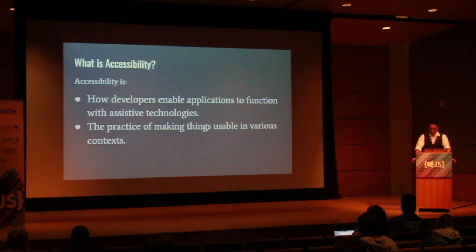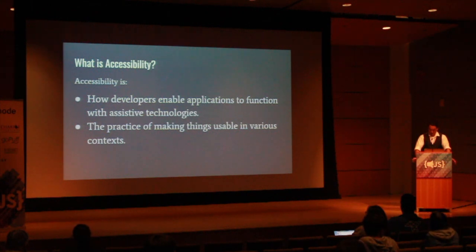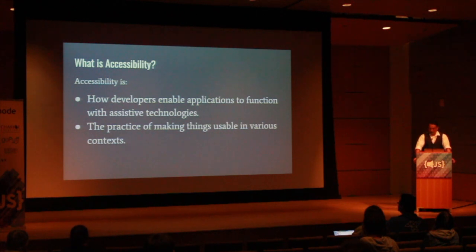Visual, auditory, motor, and cognitive are just some of the disabilities that we need to account for. Accessibility benefits people who are just temporarily disabled as well — people who are driving, parents with children, in low light, high noise environments, movies and clubs.